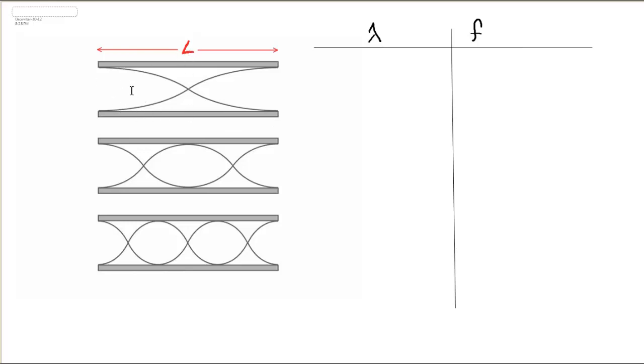So our fundamental mode exists where there's an anti-node on either end. And the longest possible wave, remember that's what the fundamental is, is where one end starts with a crest and the other end ends with a trough.